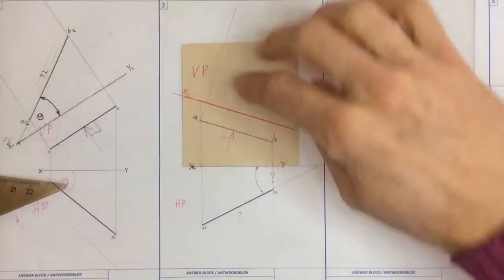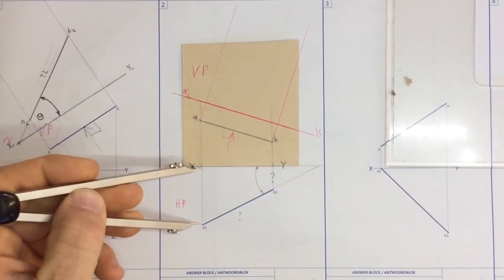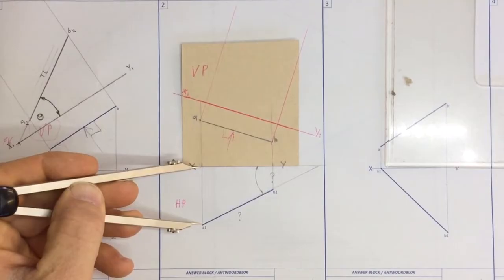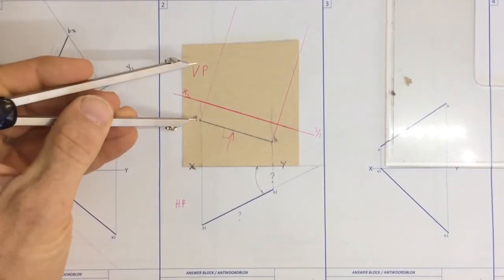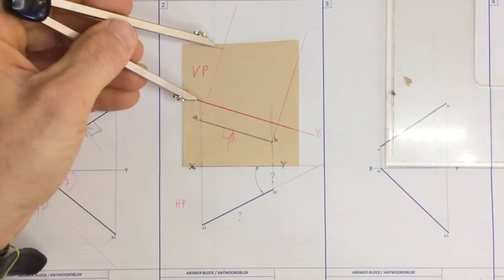Where am I going to get the measurements in order to get that line? I'm going to take them from my XY-axis down here. From A to the XY-axis. I find A over there.